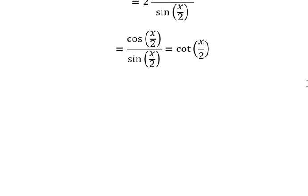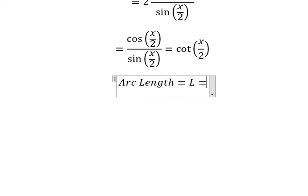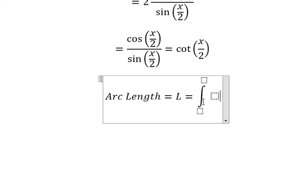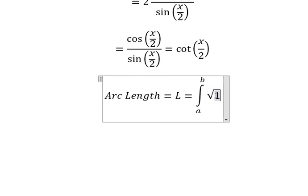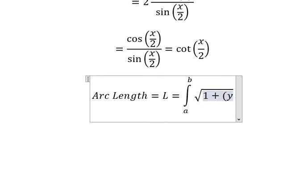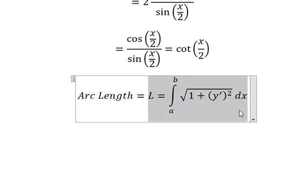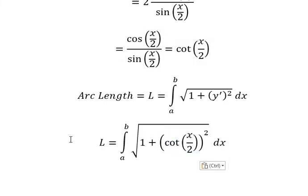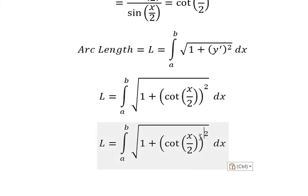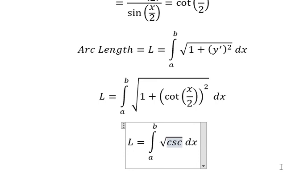Next, we apply the arc length formula. So we have L equals the integral from a to b of the square root of 1 plus the first derivative of y to the power of 2, dx. We will have cosine of x over 2, squared.